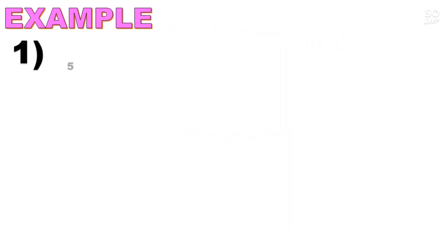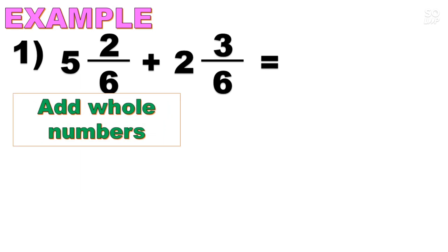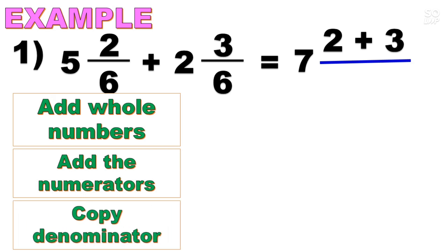Number 1: 5 and 2/6 plus 2 and 3/6. As you can observe, the two proper fractions 2/6 and 3/6 have the same denominator, so they are similar fractions. When we have similar fractions, we first add the whole numbers: 5 plus 2 is 7. Then the next step is to add the numerators — the numerators are 2 and 3, so we have 2 plus 3. Then copy the common denominator, which is 6.